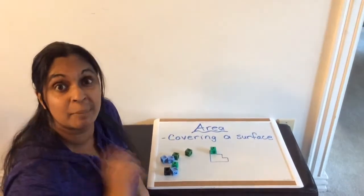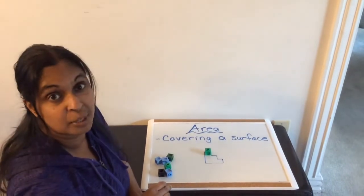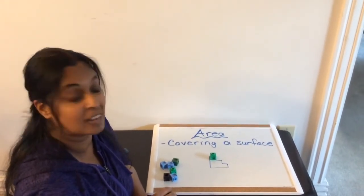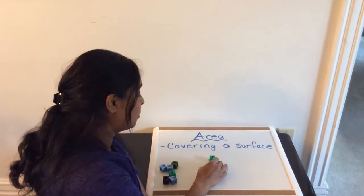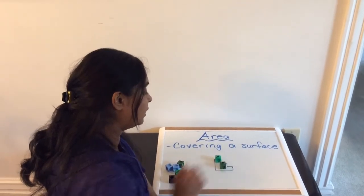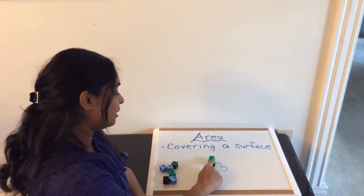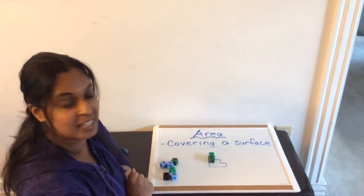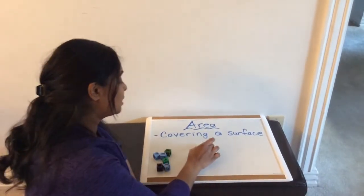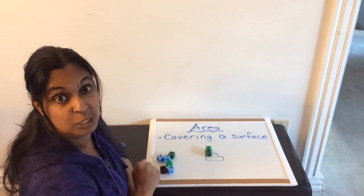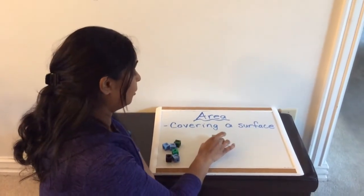Now, rule number two when you are covering an area is you want to make sure that you don't have any spaces. So we don't want to have any spaces. We want to make sure that we're pushing those tightly together, fitting exactly side by side. So make sure there are no spaces when you're filling in your linking cubes.